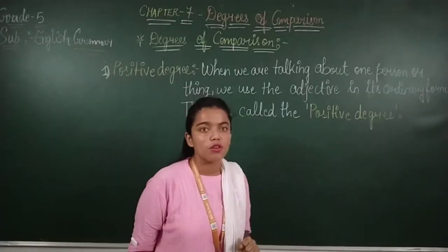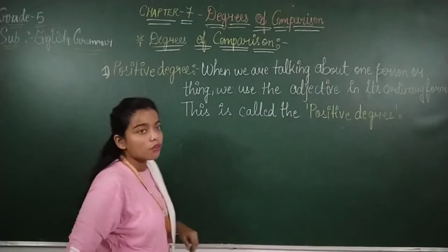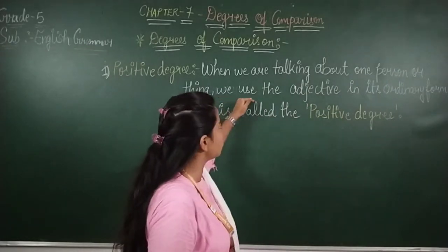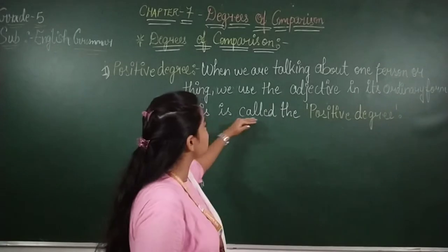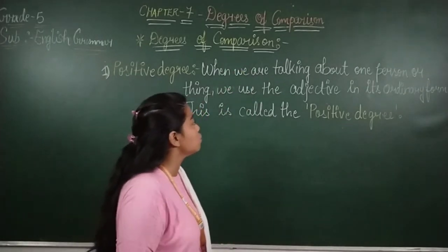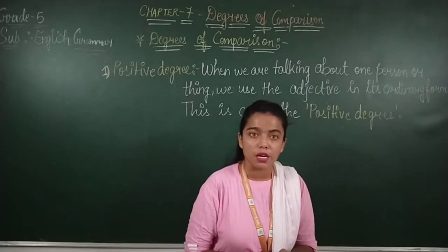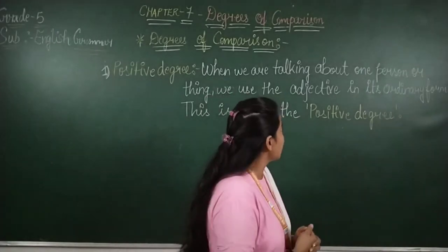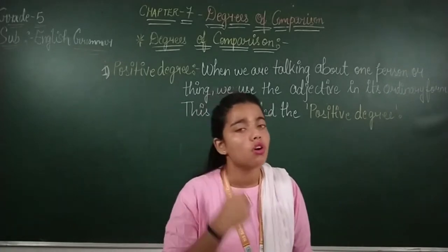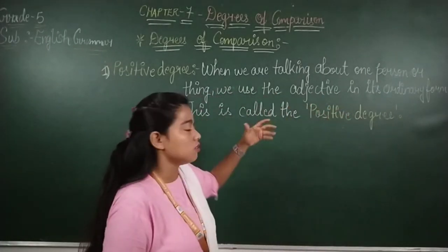Three types of degrees of comparison. Number one is positive degree. When we are talking about one person or thing, we use the adjective in its ordinary form. This is called the positive degree. When we are talking about one person or thing, we use the adjective in its ordinary form. As you all know, adjective describes the quality of a person, animal, or thing. In its ordinary form, this is called the positive degree.